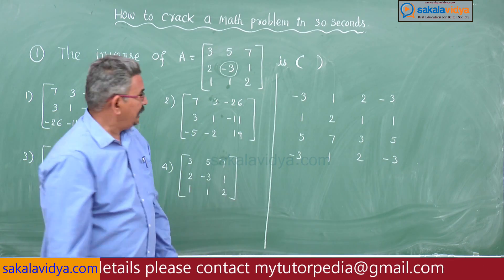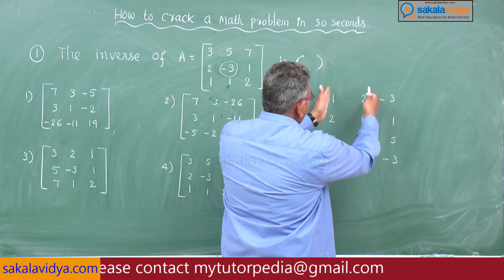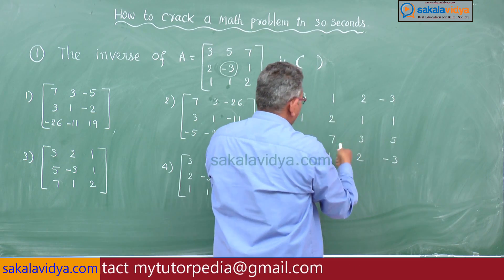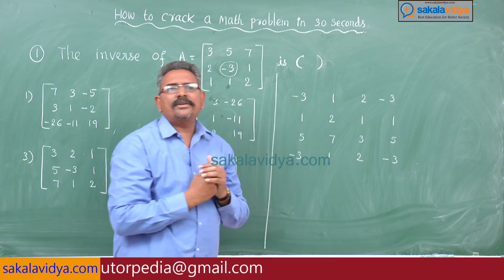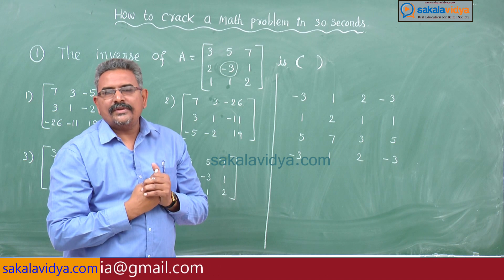Now here see, this is 2 by 2 matrix, 2 by 2 matrix, 2 by 2 matrix, 2 by 2, 2 by 2, 2 by 2. Just 2 by 2 matrix determinants we have to calculate, that is you know a d minus b c formula.